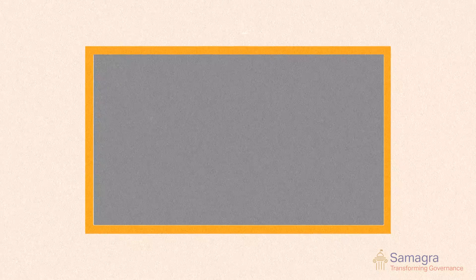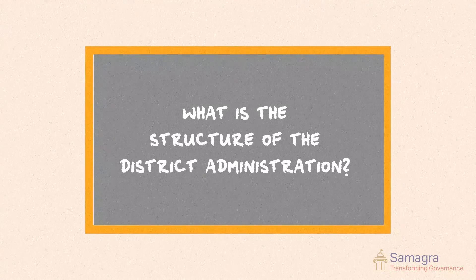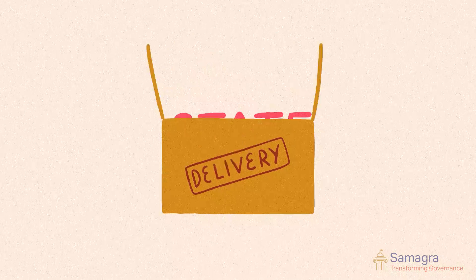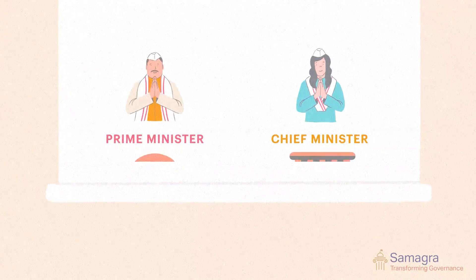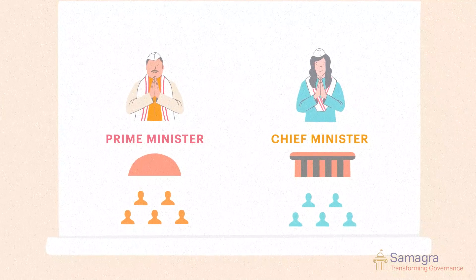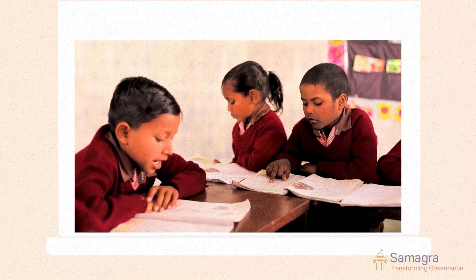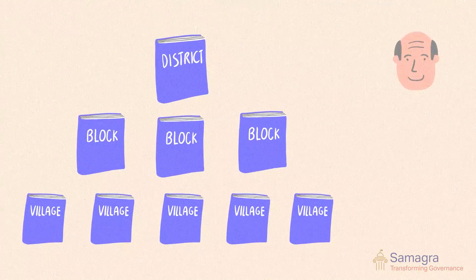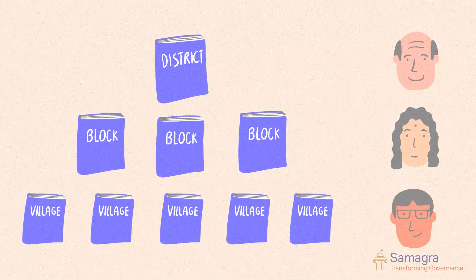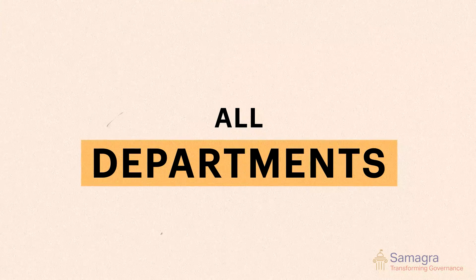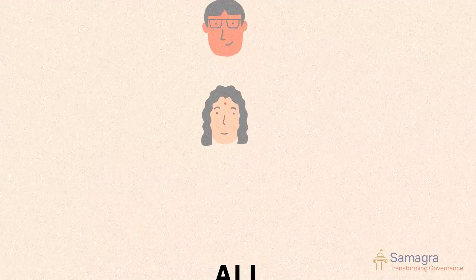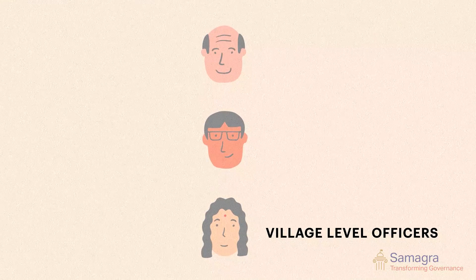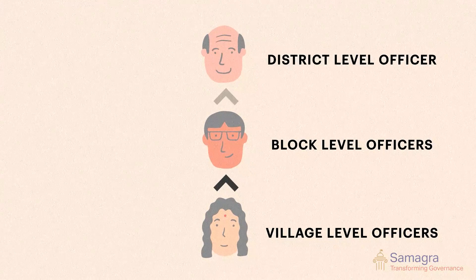What is the structure of the district administration? It is structured to deliver the mandates of the state execution branch. Consider the departments and ministries headed by ministers — education, health, agriculture, to name some. Taking the education department as an example: there is a district education officer, several block education officers, and numerous village education officers who are essentially teachers. Applying this hierarchy across all departments, numerous village level officers report to a few block level officers, who in turn report to one district level officer.